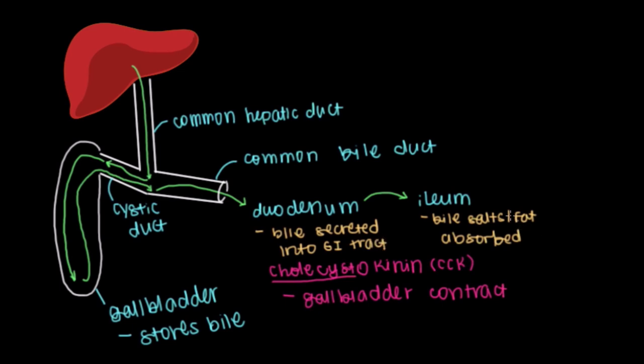We talked about what happens to fats once they're absorbed in the ileum when we discussed the small intestine. But what happens to our bile salts? The bile salts, after they've been absorbed in the ileum, circulate right back to the liver to undergo this process all over again.